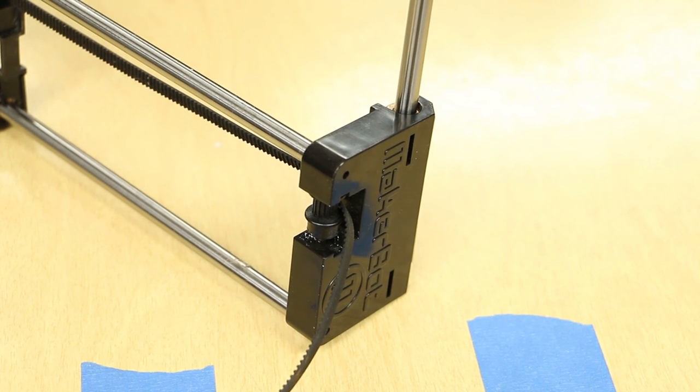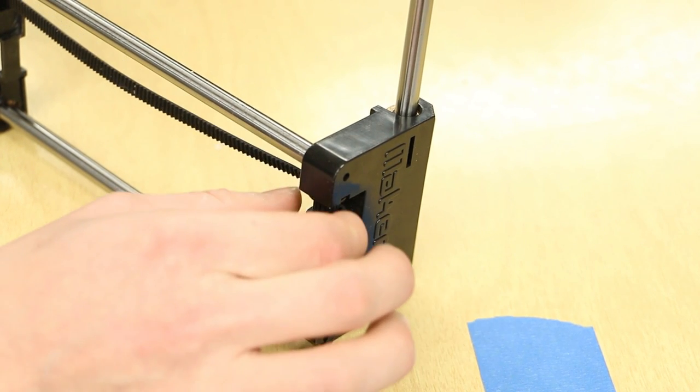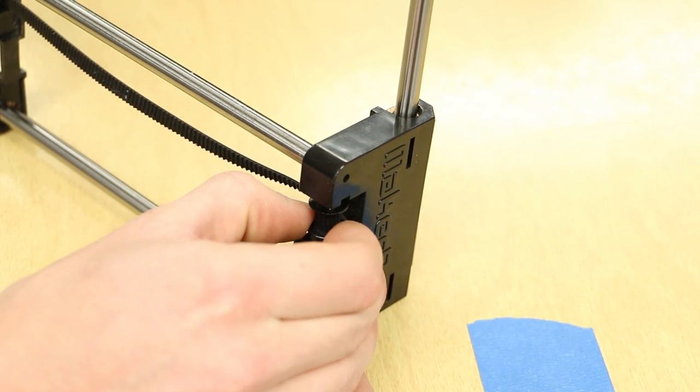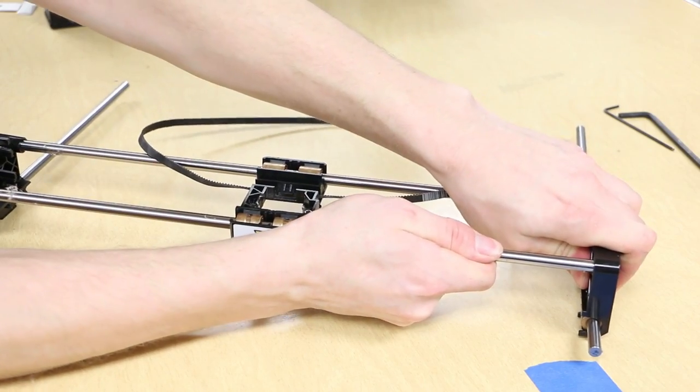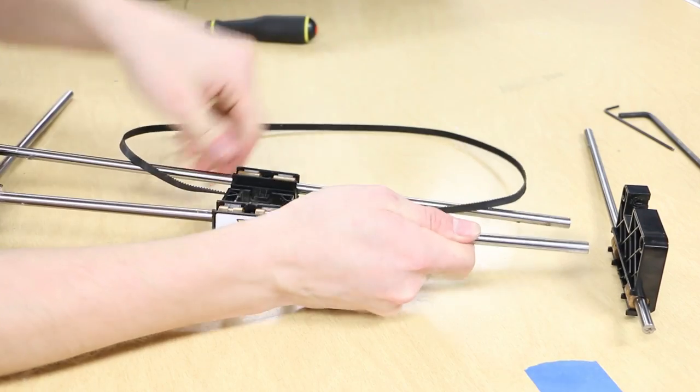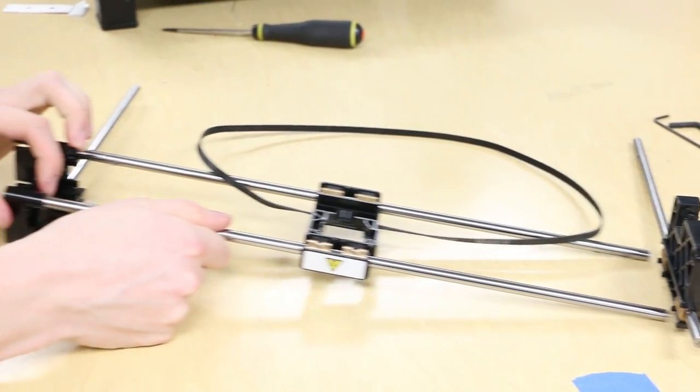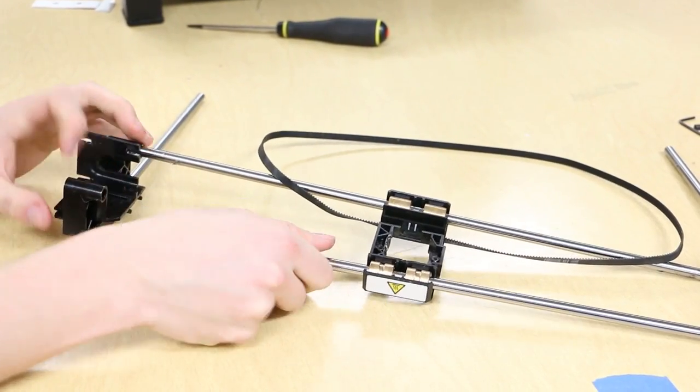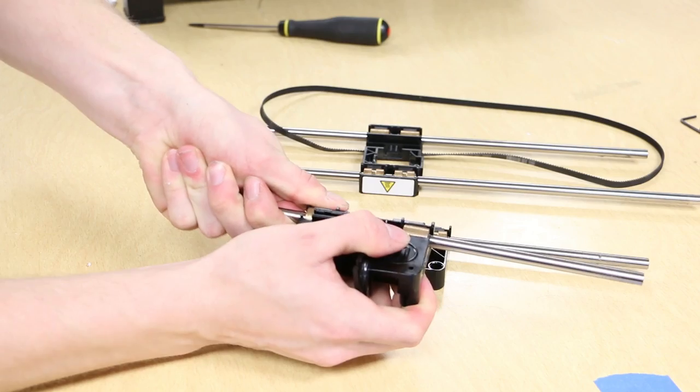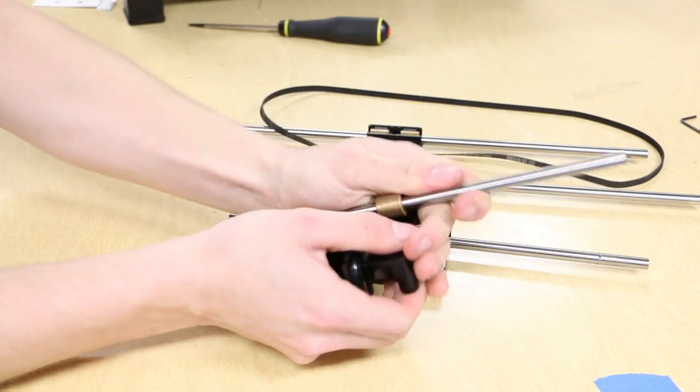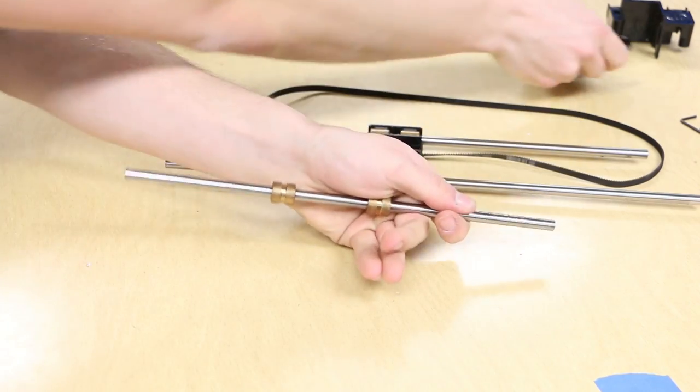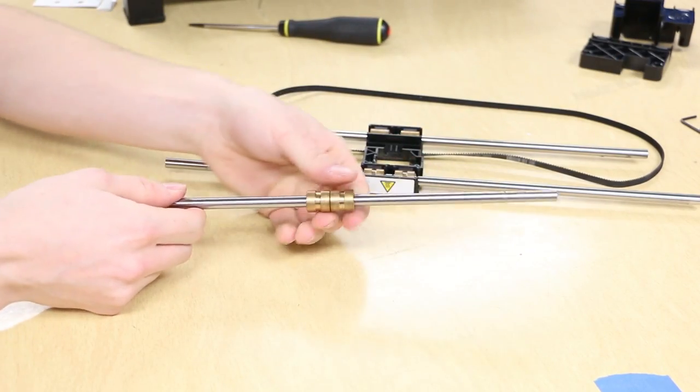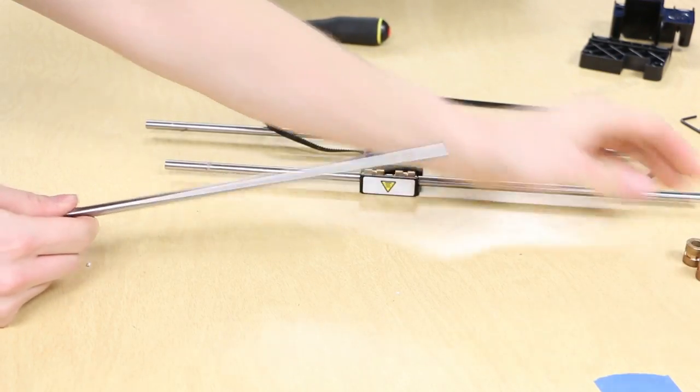On the left side, remove the X-axis idler pulley from the Y-axis secondary. Position the gantry system so you can pull the Y-axis secondary and Y-axis primary off of the X-axis linear rods. Then we will take the Y-axis primary and Y-axis secondary and remove the bushings. Once you have the rods out, pull the bushings off the linear rods.